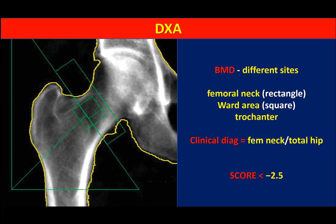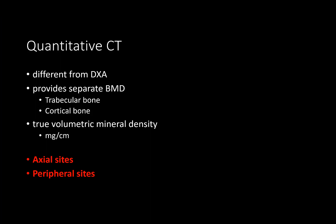Bone mineral density is measured at selected peripheral areas and if the Z-score falls below minus 2.5, the bone is considered osteoporotic. For more precise quantification, CT scan (quantitative CT) is used, providing separate bone mineral density for trabecular bone and cortical bone. This is a true volumetric mineral density measurement — unlike DEXA — expressed in milligrams per cubic centimeter, with axial and peripheral sites assessed separately.